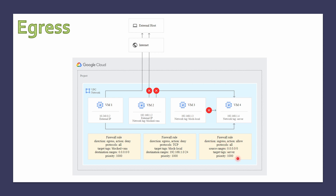Because VM1 has an external IP and firewall rules are stateful, it will also get the response back from the internet for any established connection. As for VM2, it has the network tag 'blocked-vms' with deny to all destinations at 0.0.0.0/0, so it cannot reach the internet because outgoing traffic is completely blocked. It also cannot reach VM4 since all outgoing traffic from this instance is blocked.